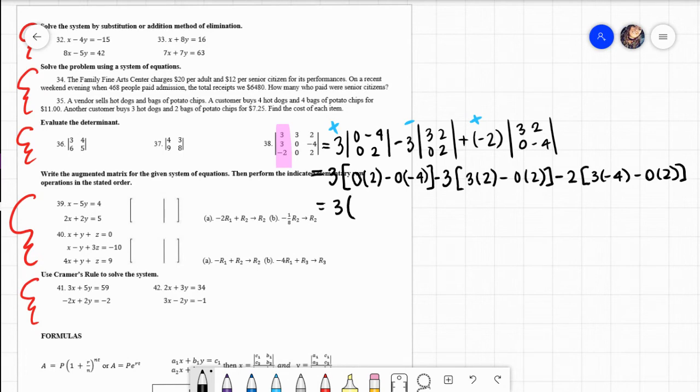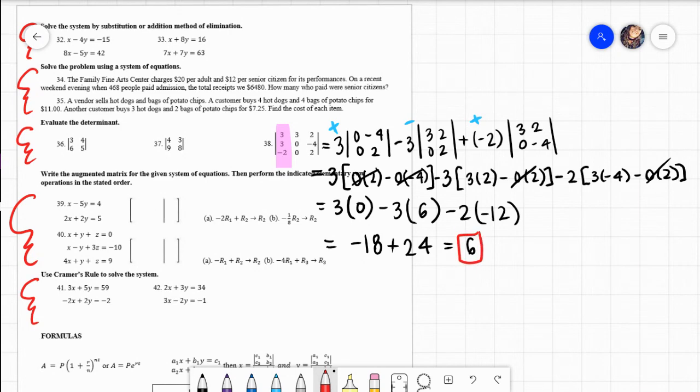So what we have is 3 times 0 times 2 is 0. And then 0 times 4 is 0. So we have a 0. Then we have a negative 3 times 3 times 2 is 6. Signs are the same, so it's positive. 0 times 2 is 0. Then we have a negative 2 times 3 times 4 is 12. Signs are different, so it's negative. 0 times 2 is 0. So we have 0, I've got a negative 18. 2 times 12 is 24. Signs are the same, so it's positive 24. And then if you look at this right here, because the signs are different, what you do is you're going to subtract and you would get 6. And then you keep the sign of the larger, so it's a positive 6. And that would be the determinant of that 3 by 3 matrix.